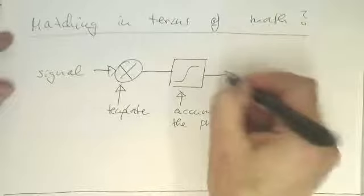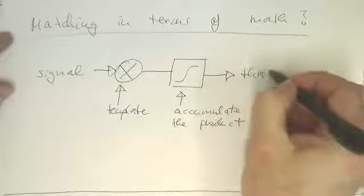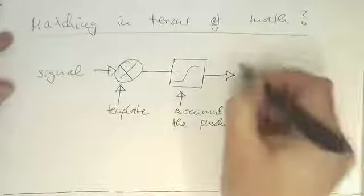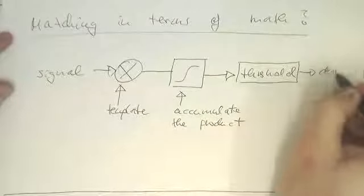And then here, we usually have a threshold which defines if it's detected or not. Let's draw a cartoonish version of this detection process here.